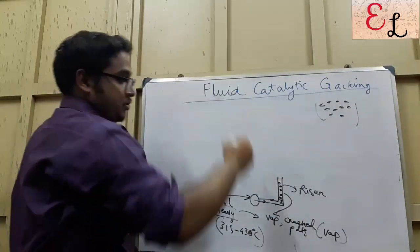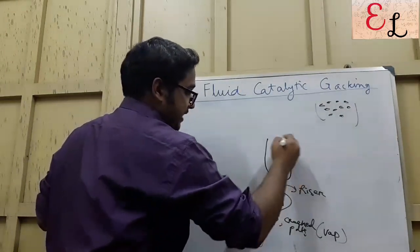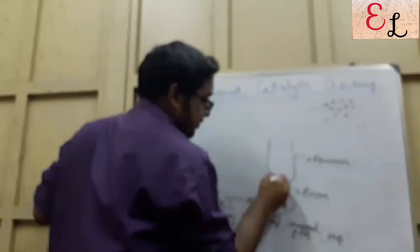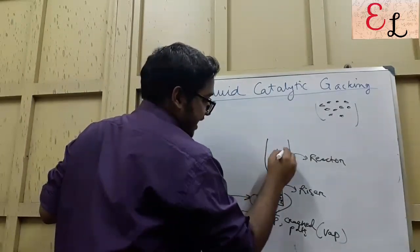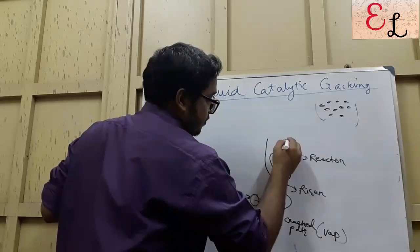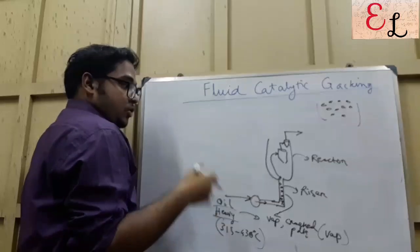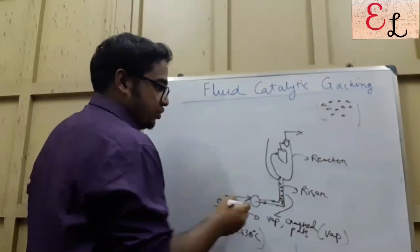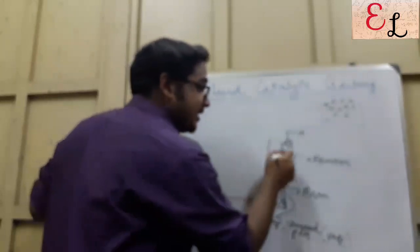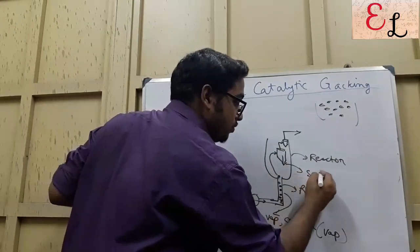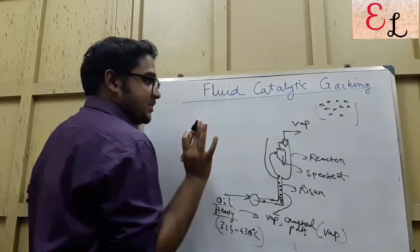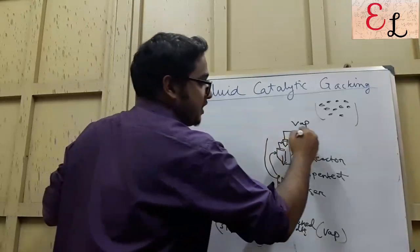The vapors and cracked products carry the catalyst to the top, where there is a reactor. The reactor embeds a cyclone separator — in fact, a series of them. Generally two cyclone separators in series are used. The work of the cyclone separator is to separate the cracked products from the catalyst. The spent catalyst is dropped down, and the cracked products and vapors are transferred to a distillation unit.